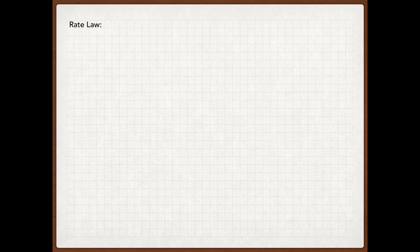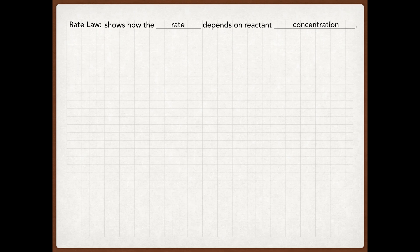In the last lesson we talked pretty extensively about the rate of a reaction, and now we're going to be talking about rate laws. The purpose of a rate law is to actually show you how the rate depends on the reactant concentration. So if I increase the concentration of a specific reactant, how is that going to affect the rate of the reaction? That's what a rate law allows you to determine.